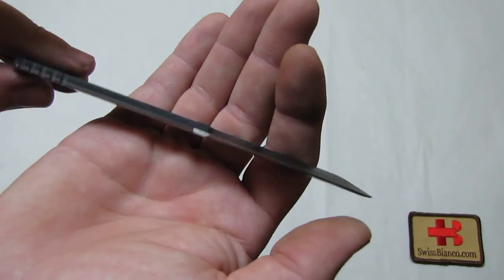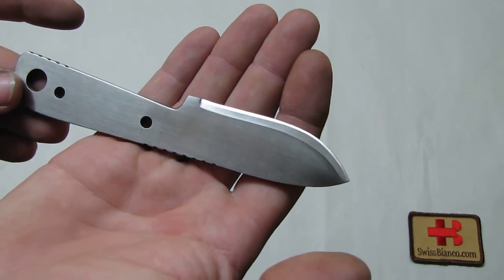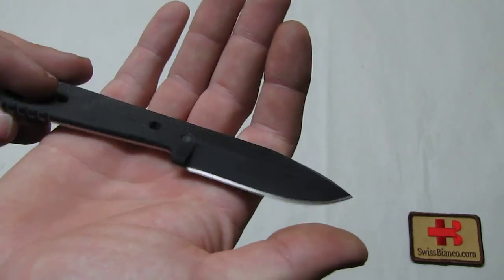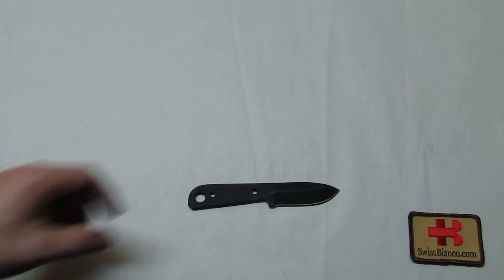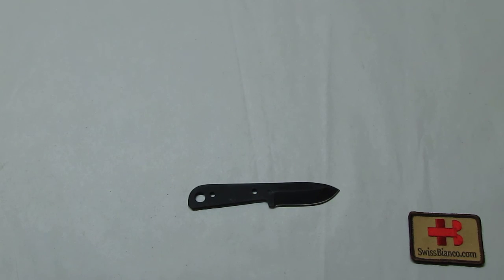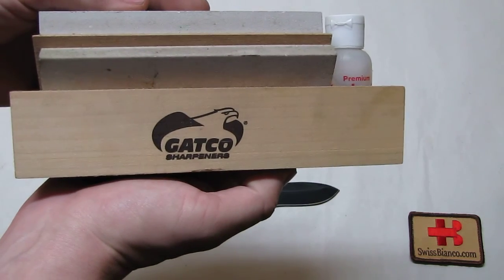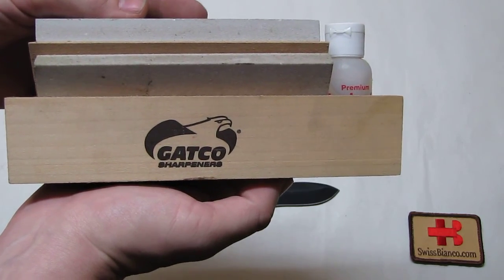So I'm gonna show today in this video how that could be done. Now for resharpening this knife I basically use the Timberline sharpeners. They use the Gatko brand name for their sharpeners. Timberline is for knives, Gatko is for the sharpeners.